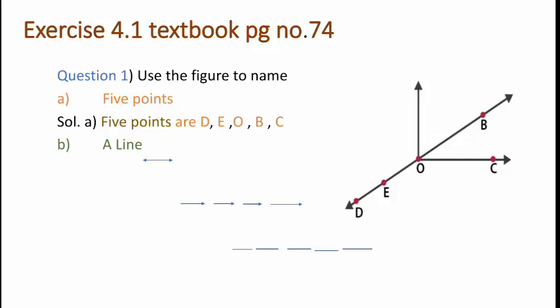Next, you have to name a line. What is a line? A line is a straight set of points that extends in opposite directions without ending. For the given figure, the name for a line is line BD.